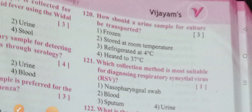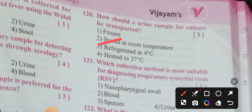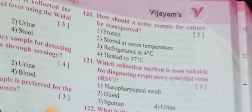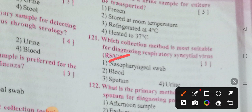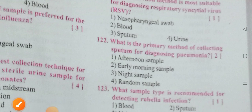How should a urine sample for culture be transported? Options: room temperature, refrigerated at 4 degrees, heated to 37 degrees. Option 3 is the correct answer: refrigerated at 4 degrees. Which collection method is most suitable for diagnosing respiratory syncytial virus (RSV)? Options: nasopharyngeal swab, blood, sputum, urine. Option 1 is the correct answer: nasopharyngeal swab.